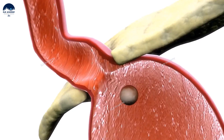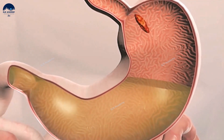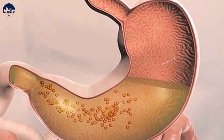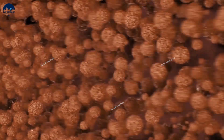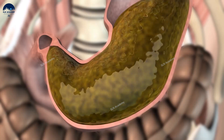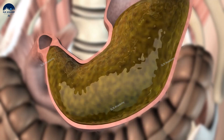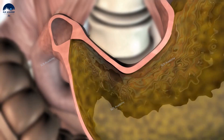The stomach muscles churn and mix the food with acids and enzymes. The enzymes break down the food into much smaller digestible particles and into small molecules that can be absorbed into the blood. By the time the food is ready to leave the stomach, it is processed into a thick liquid called chyme.